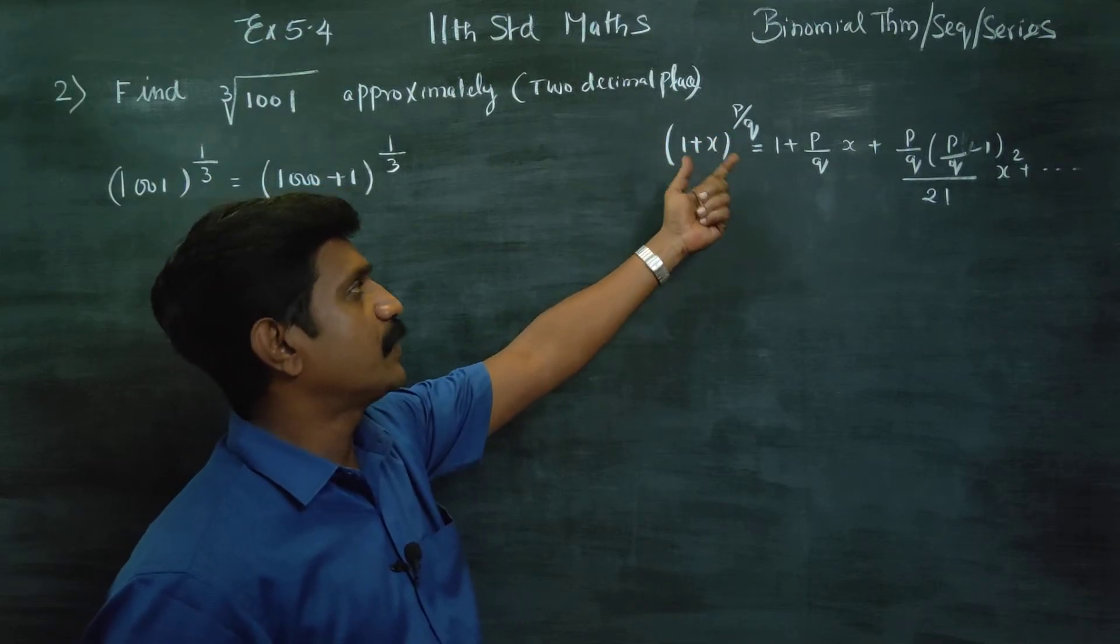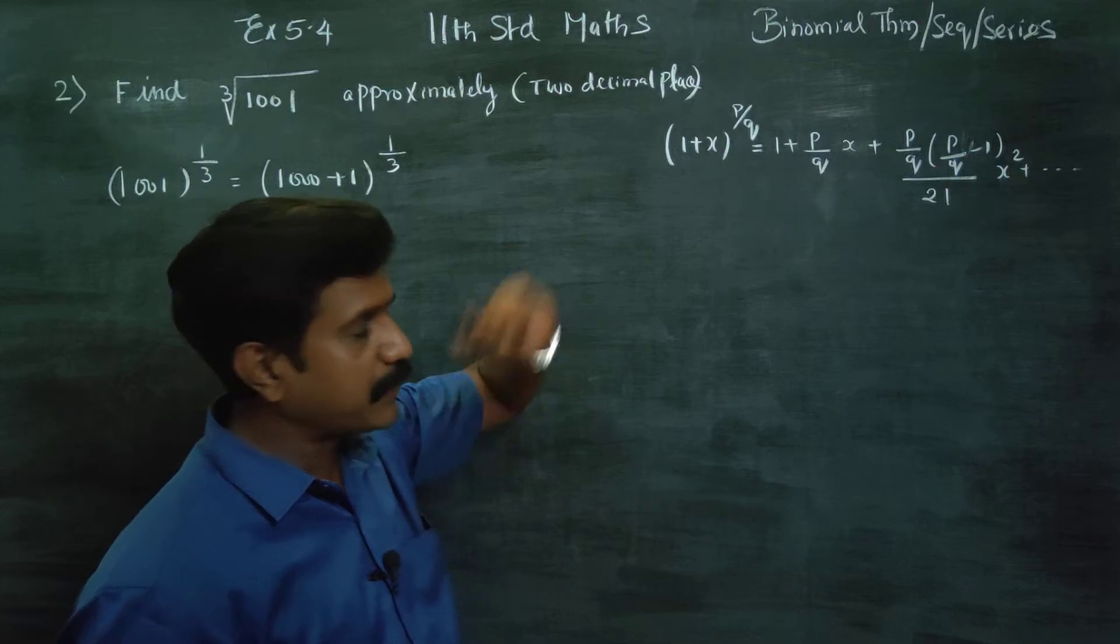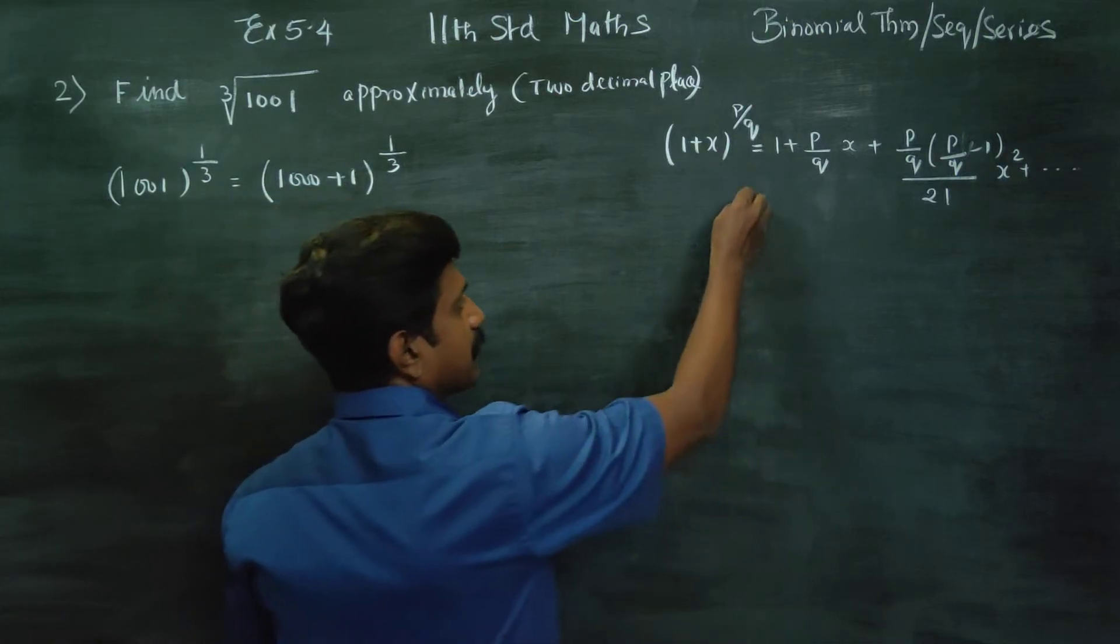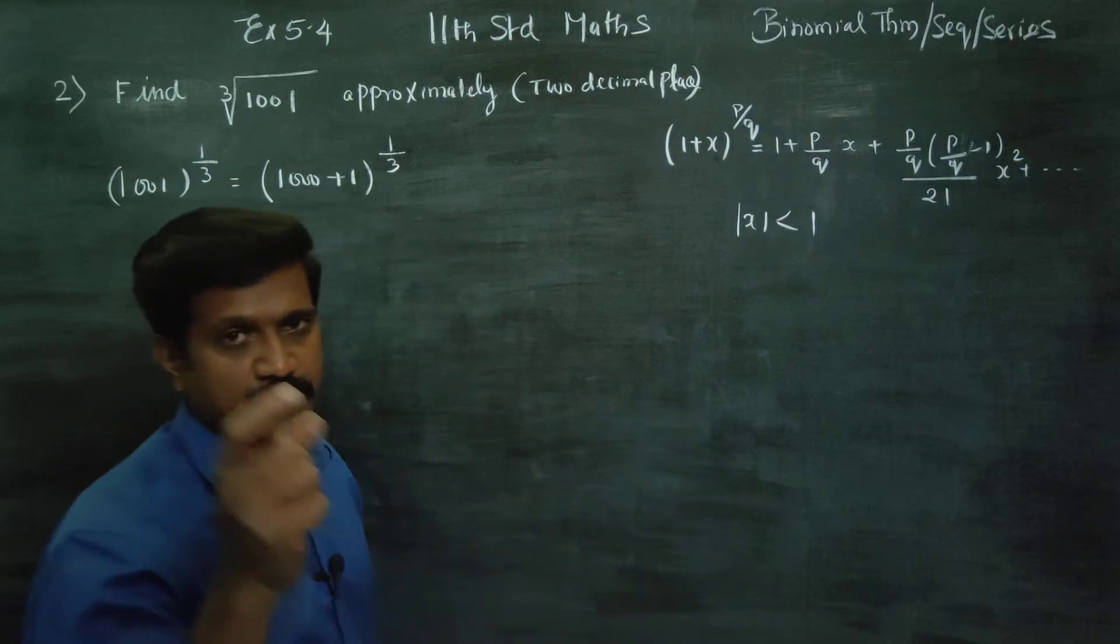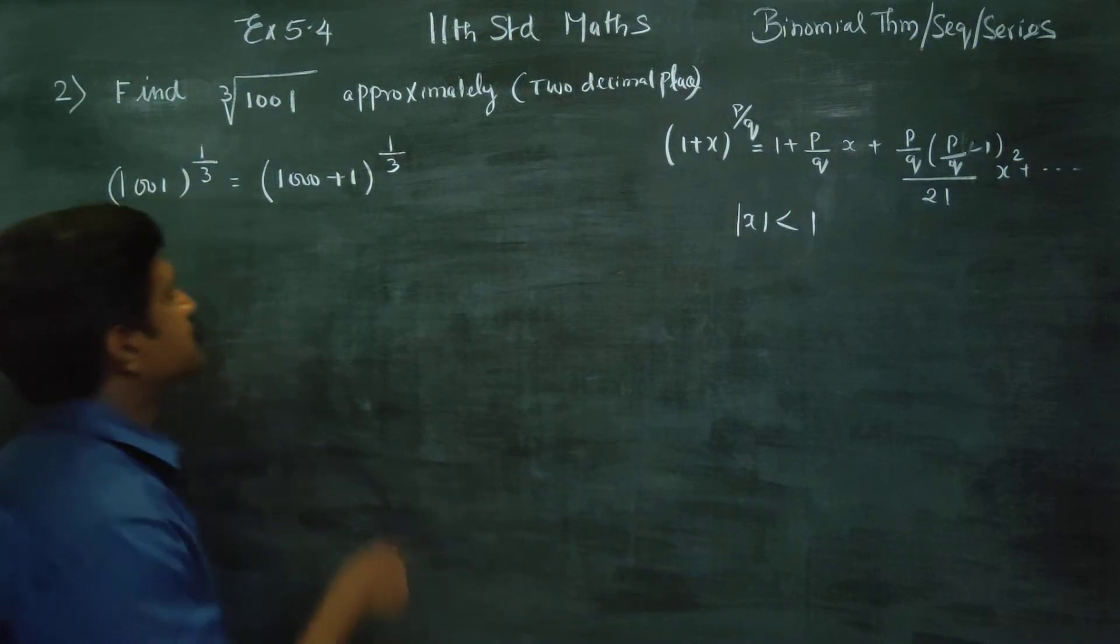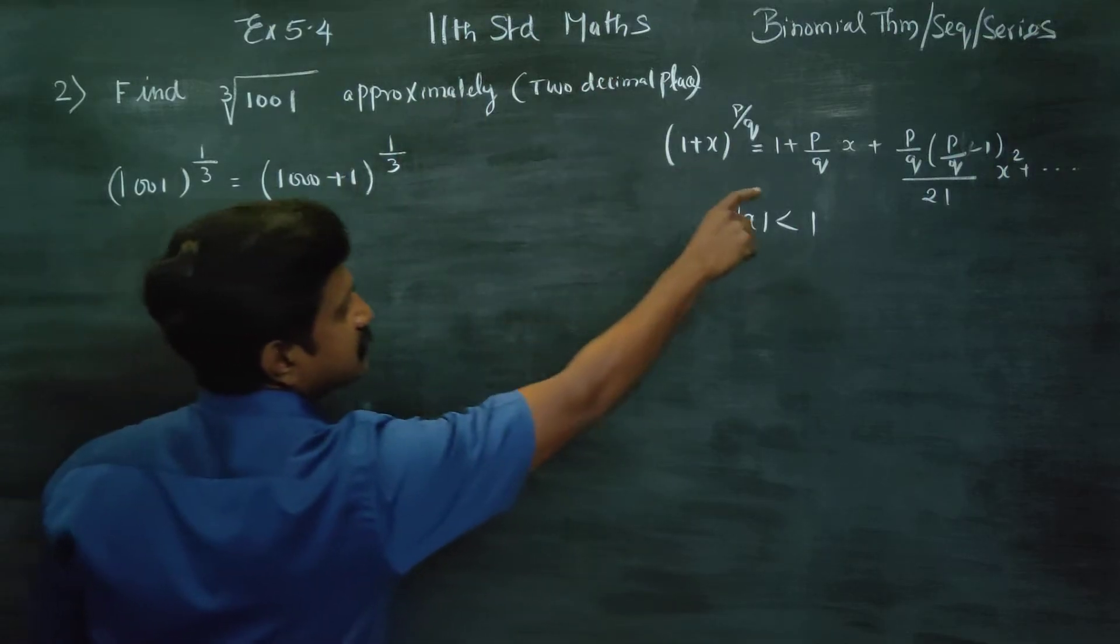What is the binomial theorem for rational index? Rational exponent should be used. Because the main condition is your x must be, absolute value must be less than 1. This is not less than 1. Therefore, you can't apply this theorem.